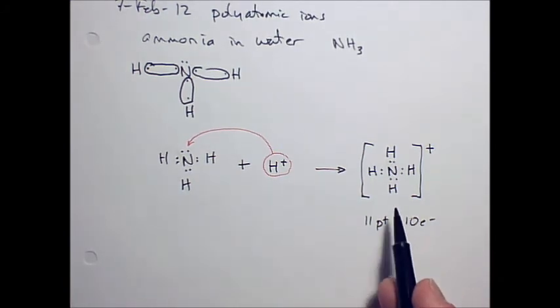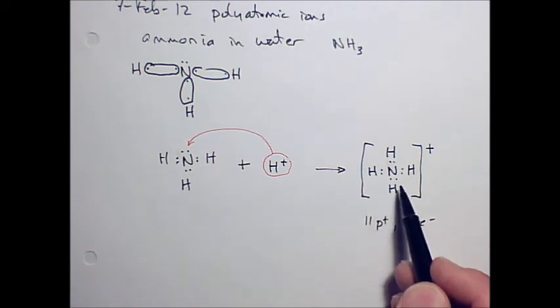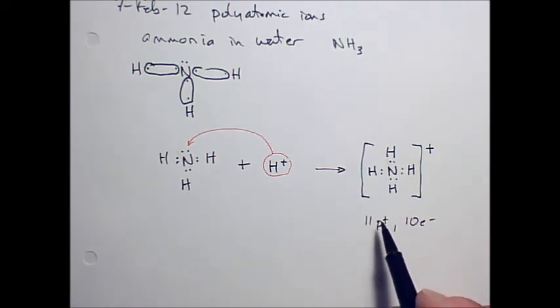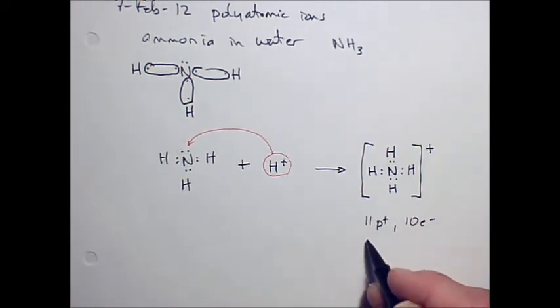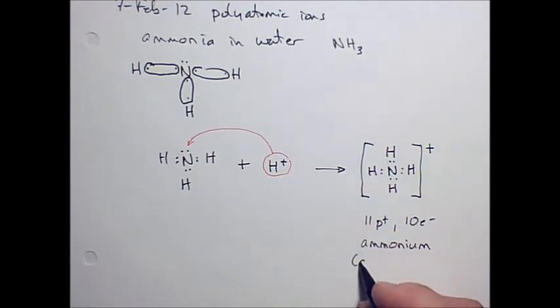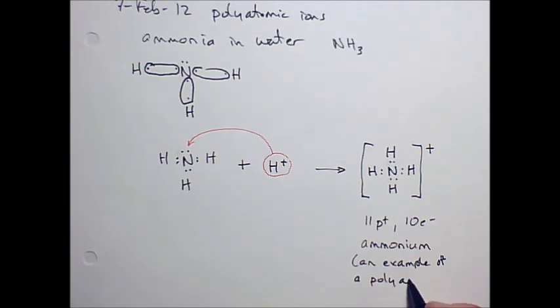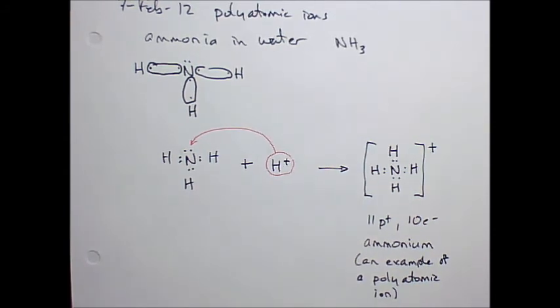So this then is another example of a polyatomic ion. It's a covalently bonded set of atoms, atoms that are covalently bonded together with an unequal number of protons and electrons. And this has a special name too. It's called ammonium. And this is an example of a polyatomic ion. And by definition, a polyatomic ion is a covalently bonded group of atoms with an unequal number of protons and electrons.